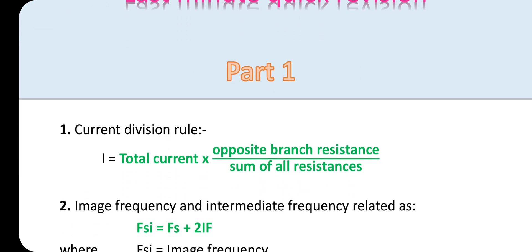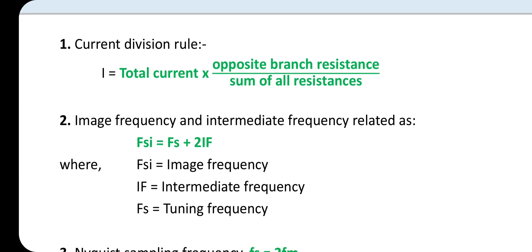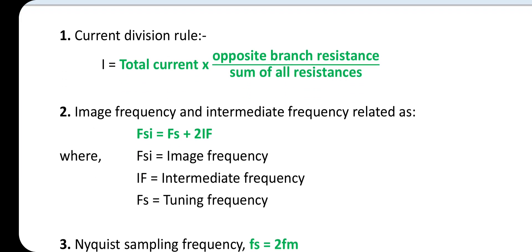First one: Current Division Rule. I equal to total current into opposite branch resistance, divided by sum of all resistance.